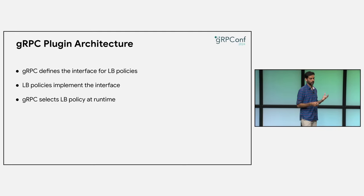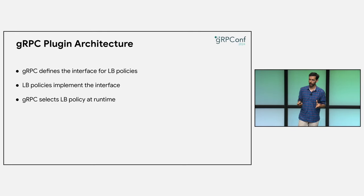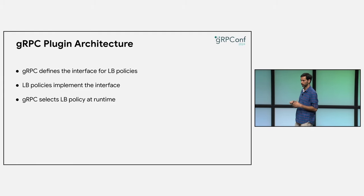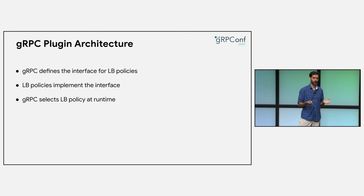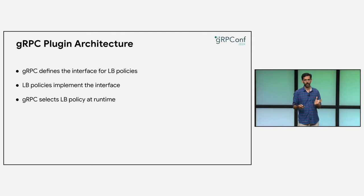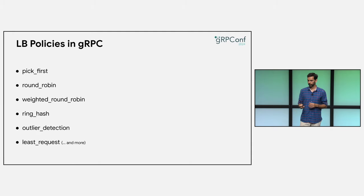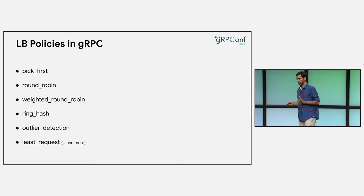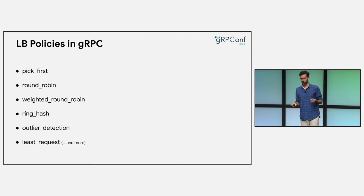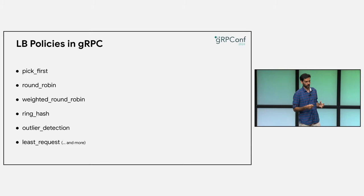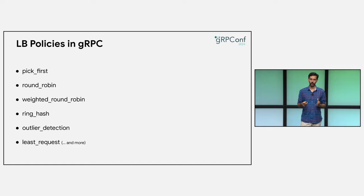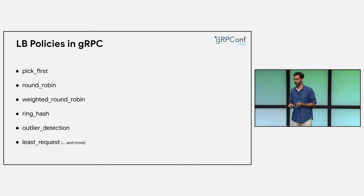gRPC defines an interface for LB policies, and individual LB policies implement that interface and register themselves with gRPC at init time. At runtime, gRPC selects the LB policy to use. gRPC ships with a bunch of LB policies, and the plugin architecture also allows you to write your own LB policies. But given how many LB policies we support, we don't expect you to have that need — but if you want to, you can do that with the plugin architecture.